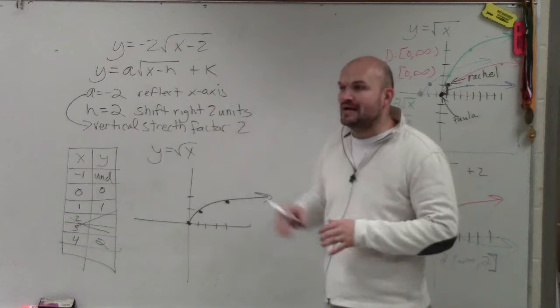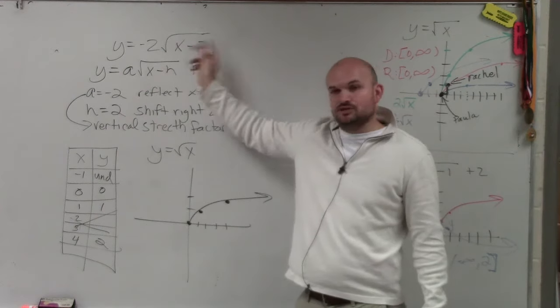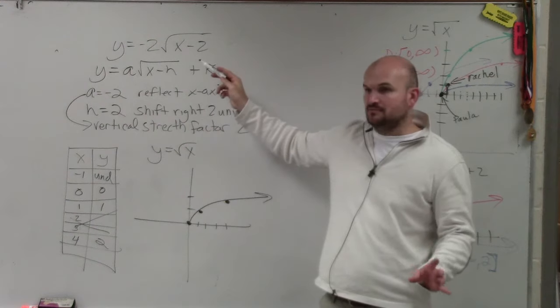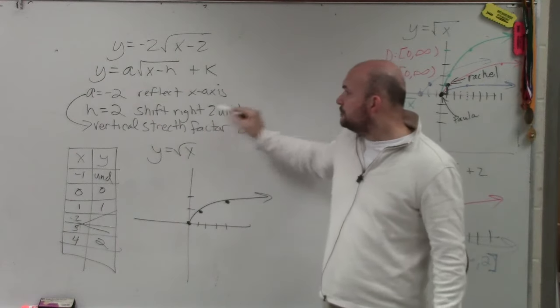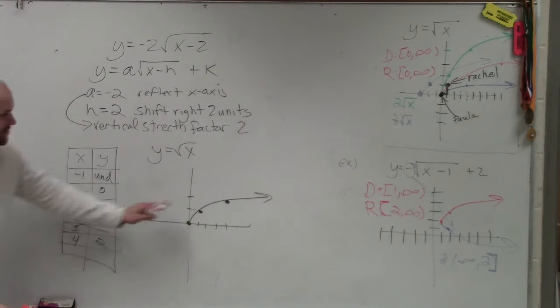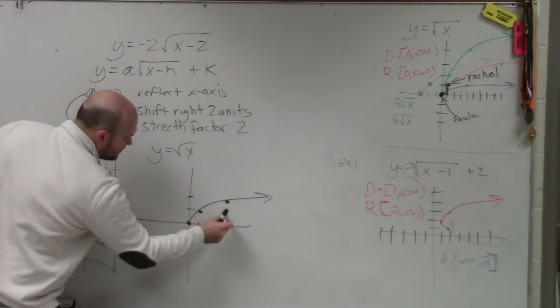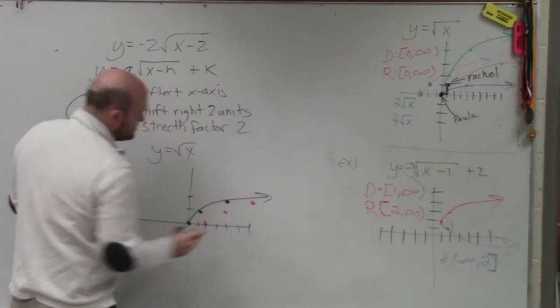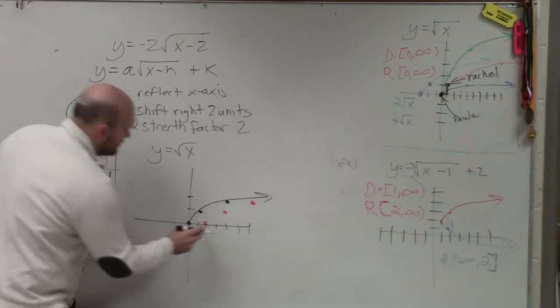So now all we're going to do is go back to our factors. So what's happening to this graph? Or let's go back to our transformations. Is this graph being shifted at all left or right? Yeah, it's being shifted where? Two units to the right. So all I'm simply going to do is take each of my two points that I found, and I'm just going to move them two points to the right. Does that make sense? Does that make sense?